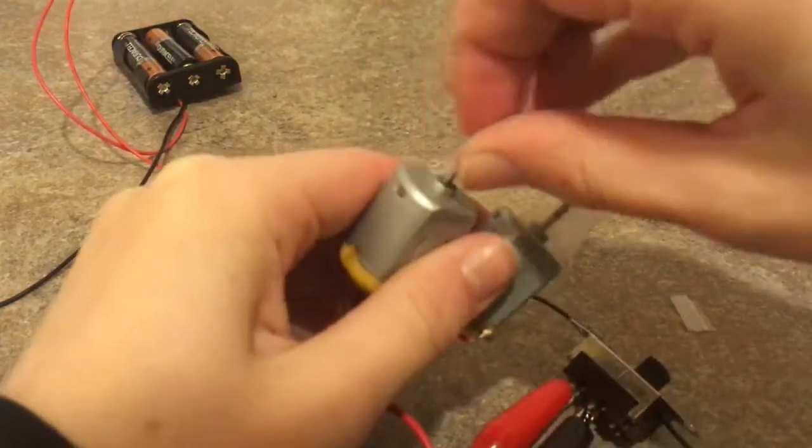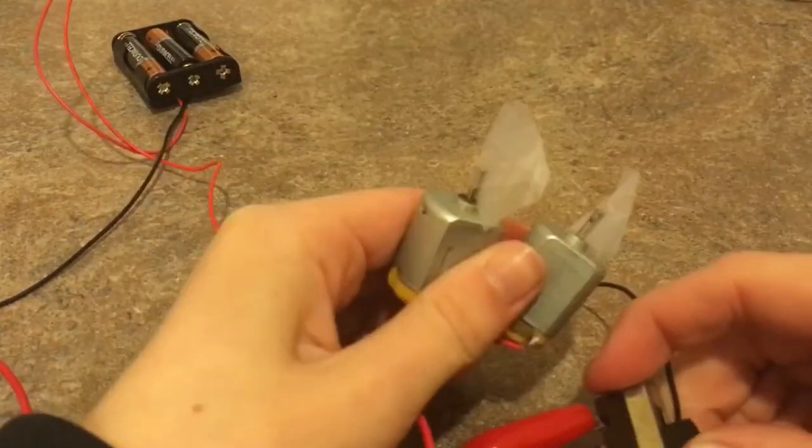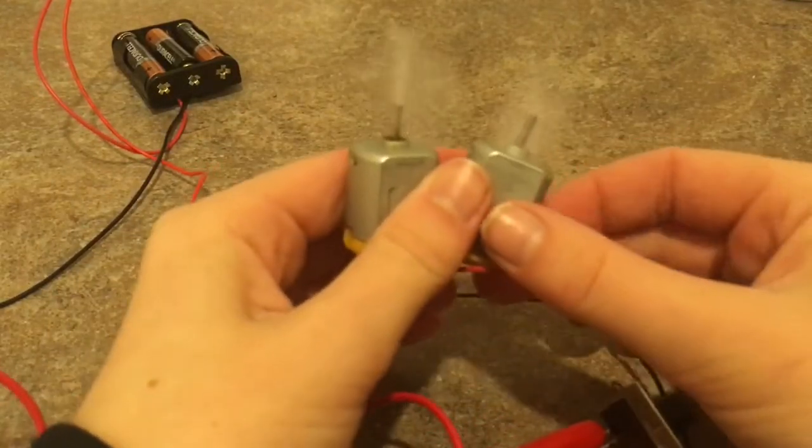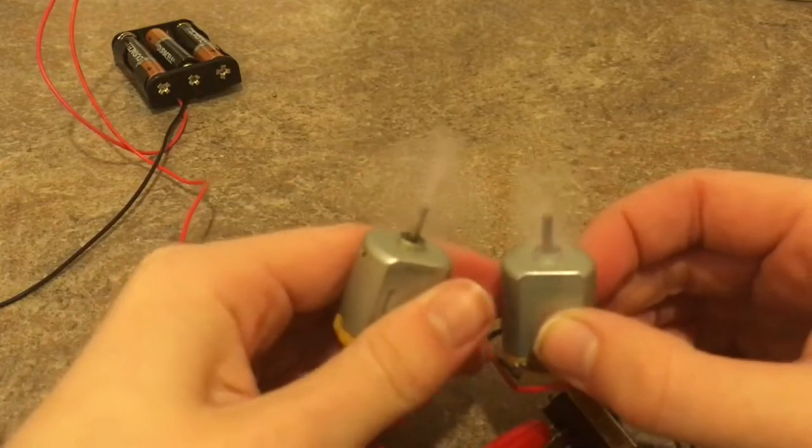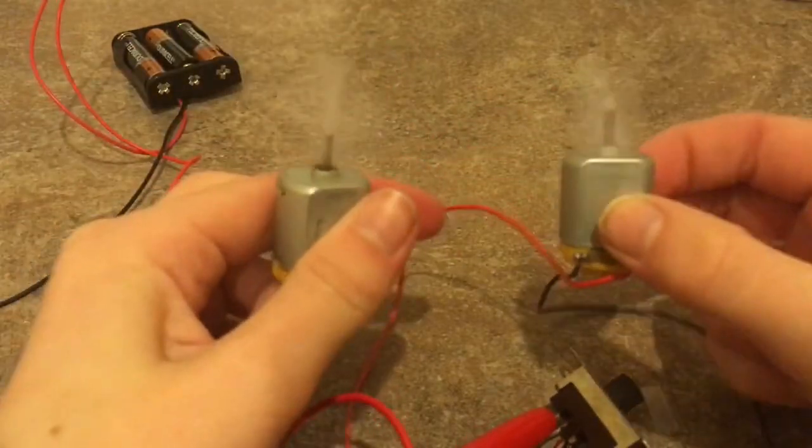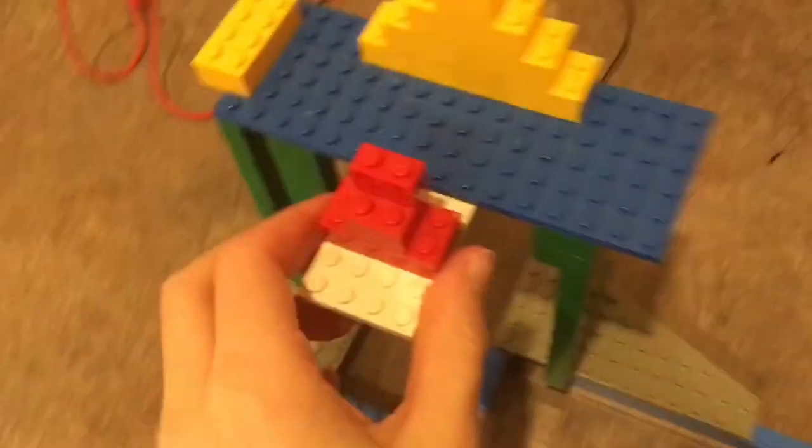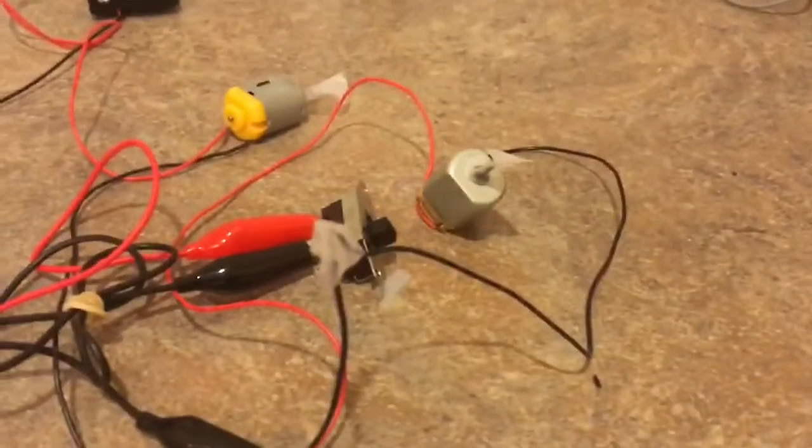This one over here is just taped down. So now you have two motors attached to one battery pack and one switch. That's how you would wire that up. Yes, I built this using the Lego. Hope you enjoyed, please like, comment, and subscribe.